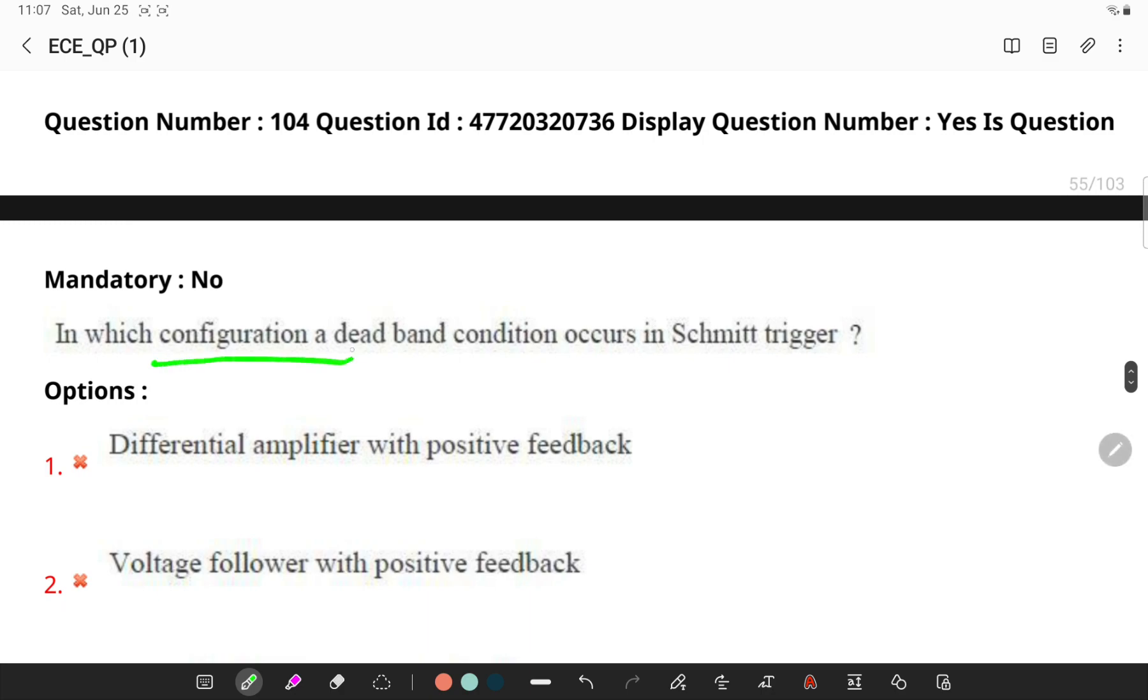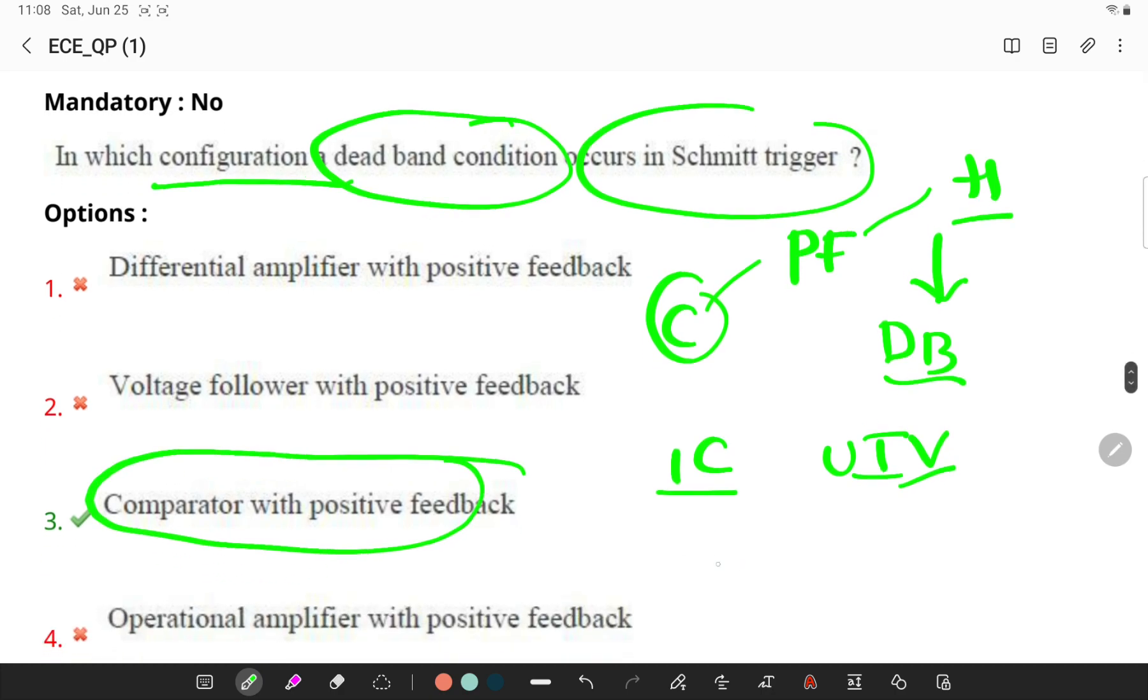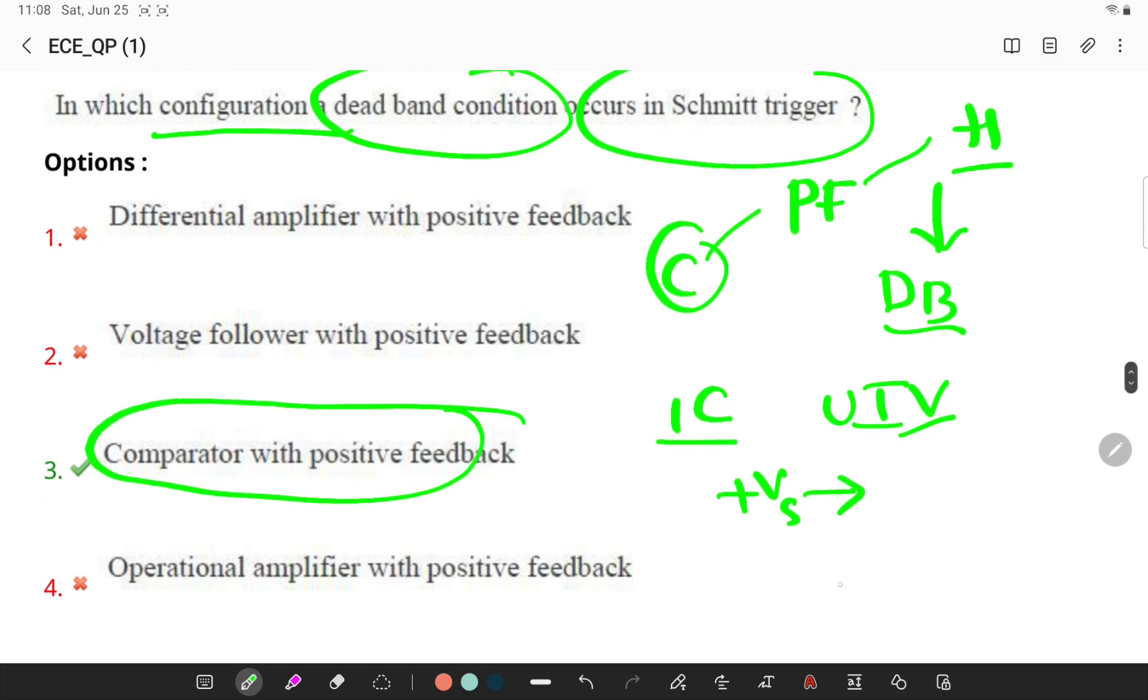In which configuration a dead-band condition occurs in a Schmitt trigger? The comparator with positive feedback is said to exhibit hysteresis, a dead-band condition in which when the input comparator exceeds the upper threshold voltage, the output switch will be moving from plus V-sat to minus V-sat and it reverts back to the original state plus V-sat when the input goes below a particular threshold voltage.